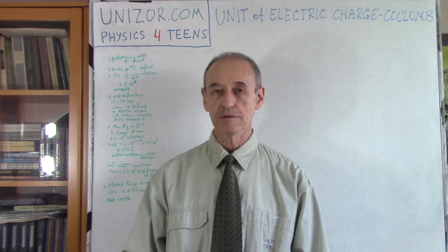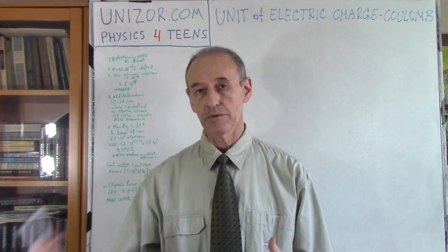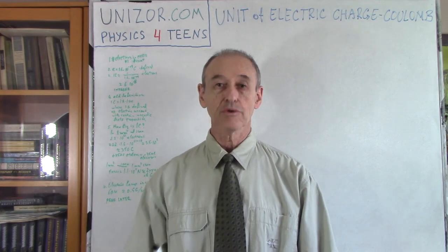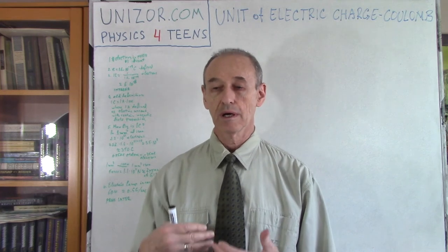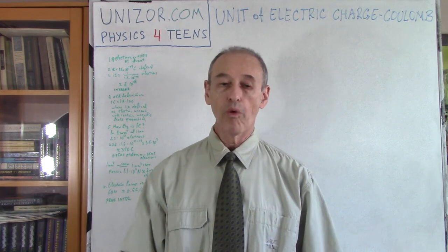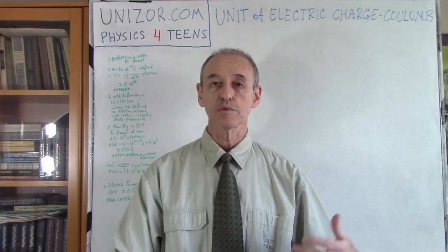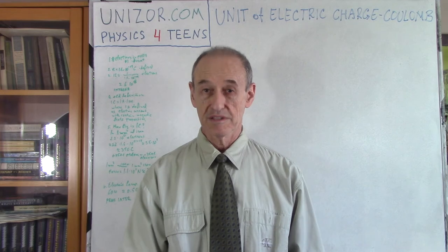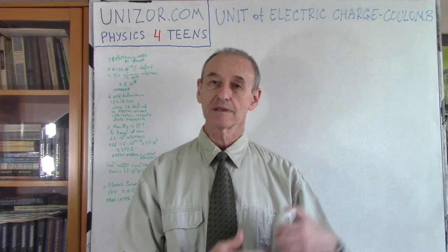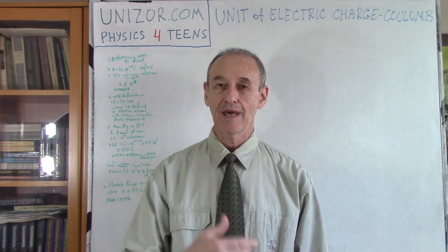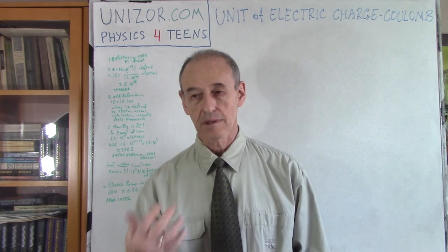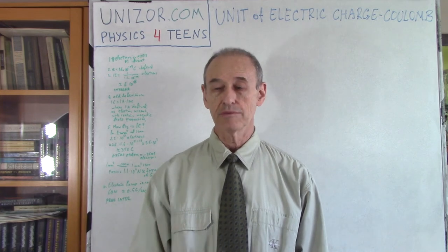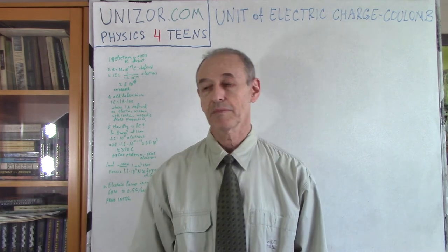Certain electrons are in excess of the number of protons, and this excess of electrons — the number of these electrons — is a very good quantitative characteristic of the charge. Or if it's a deficiency of electrons with positive charge, the number of electrons which are deficient, which are less than the number of protons in the atoms of this object, basically gives you the exact amount — the measure, if you wish — of the positive charge.